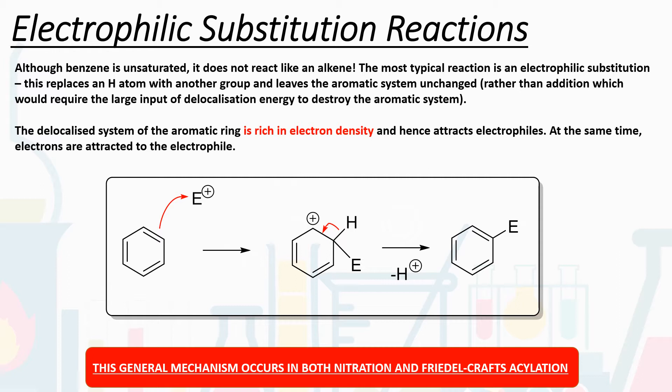The most typical reaction is electrophilic substitution — replacing an H atom with an electrophile, leaving the aromatic system unchanged overall. The delocalized pi system of the aromatic ring is very rich in electron density above and below the ring, so it attracts electrophiles. Our benzene ring acts as a nucleophile, an electron pair donor, while the electrophile is the electron pair acceptor. This general mechanism occurs in both nitration and Friedel-Crafts acylation reactions.